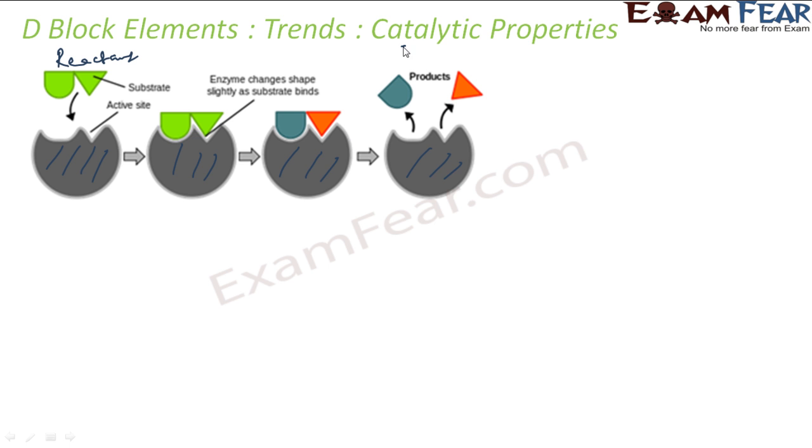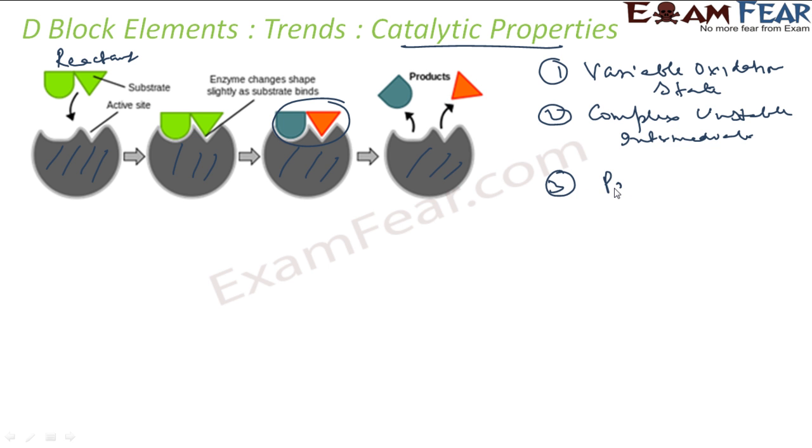The transition metals have catalytic property. Why? There are several reasons. First, transition metals have ability to adapt to variable oxidation states - this variable oxidation state is one of the key reasons. Second, it forms complex, and these complexes can also form unstable intermediate complexes. Third, it has partially filled d orbital, and this d orbital provides active sites and also large surface area for adsorption.